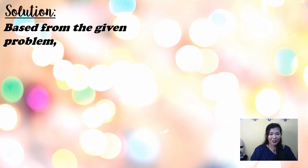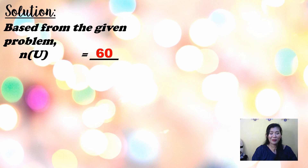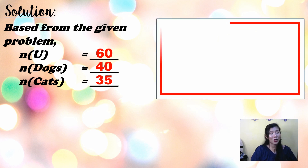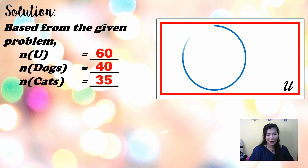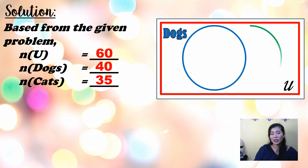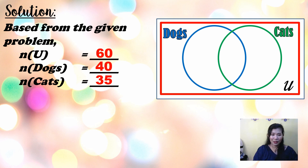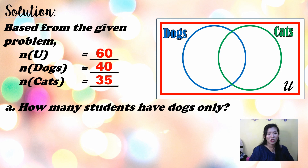To make everything clear on how to solve problems involving Venn diagrams, here is the solution. The universal set is 60. The number of students who own dogs is 40 and the number who own cats is 35. Let the blue circle be the set of dogs and the green circle be the set of cats.